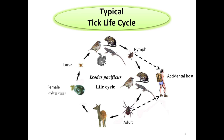Here is a typical tick life cycle. After the female tick lays eggs, they hatch into tiny larvae. The larva takes a blood meal from a bird, rodent, or lizard and molts into a nymph. The nymph will obtain a blood meal from any number of hosts, including humans, prior to molting into the adult stage. The adult tick will commonly bite deer and can also bite humans. As accidental hosts, humans risk contracting disease from both the nymphal and adult stage.